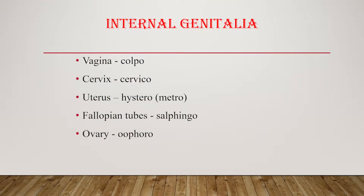If a surgeon decides to remove any of these external genitalia, we call it vulvectomy. Let's move on to the internal organs. We need to know the vagina — this is the birth canal. The vagina has anterior and posterior walls, and we call the vagina 'colpos' as a medical term.